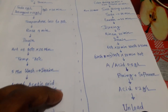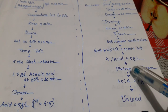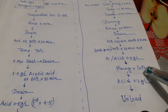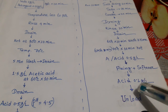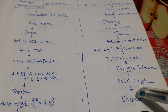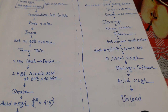Then add acetic acid at 0.5 grams per liter, then apply fixing and softener. Then acetic acid at 0.1 grams per liter. After that, unload the fabrics. This is all about the black color dyeing process.